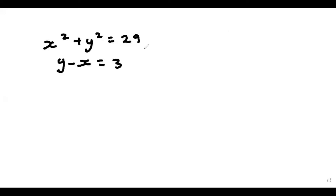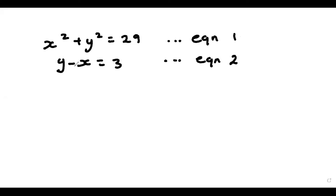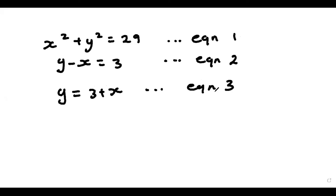So let's say we have this question here: x squared plus y squared is equal to 29, and y minus x is equal to 3. Based on this, you can realize that equation 1 is our non-linear, and equation 2 is our linear. We have y minus x equals 3, so we can choose either x or y to be the subject. I'm going to let y equal to 3 plus x, and call this equation 3. Now I'm going to substitute (3 plus x) anywhere I see y in equation 1.